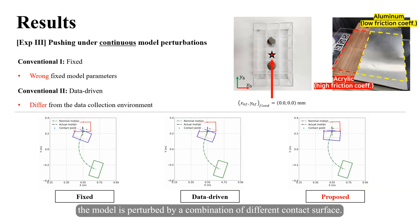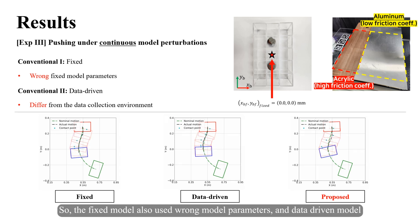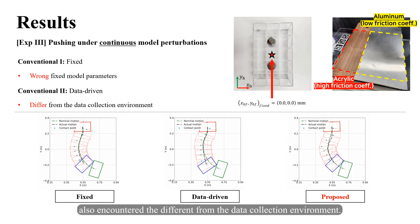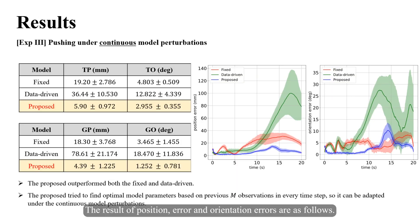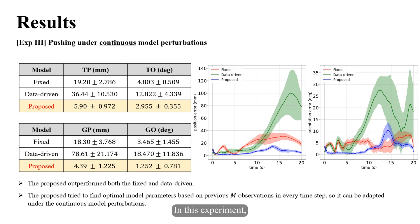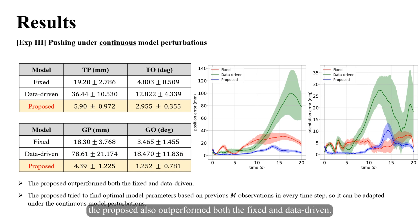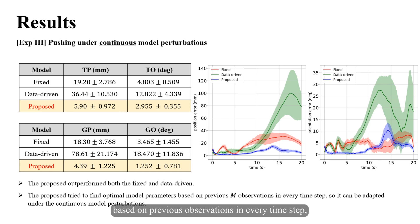In the third experiment, the model is perturbed by a combinative different contact surface. Again, the fixed model uses wrong model parameters and the data-driven model encounters conditions different from its data collection environment. The proposed method outperformed both the fixed and data-driven approaches, verifying that it can find optimal model parameters based on previous observations at every time step and adapt under continuous model perturbations.